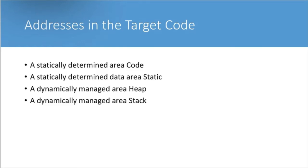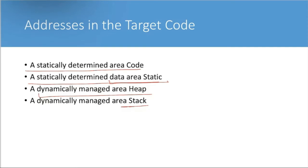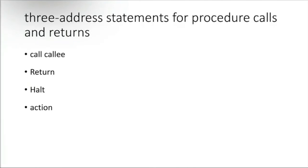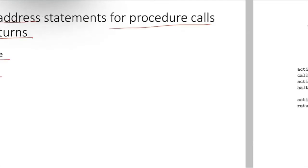Addresses in target code: a statically determined area is the code area. The statically determined data area is static. Dynamically managed areas are the heap and the stack. Three-address statements for procedure calls and return include: call the callee, callee returns something, it can halt, and there can be some action.